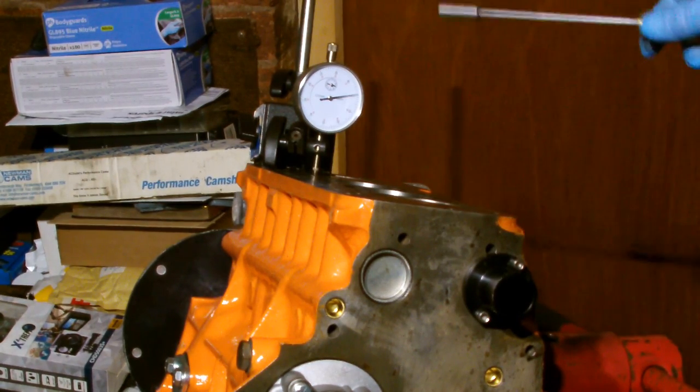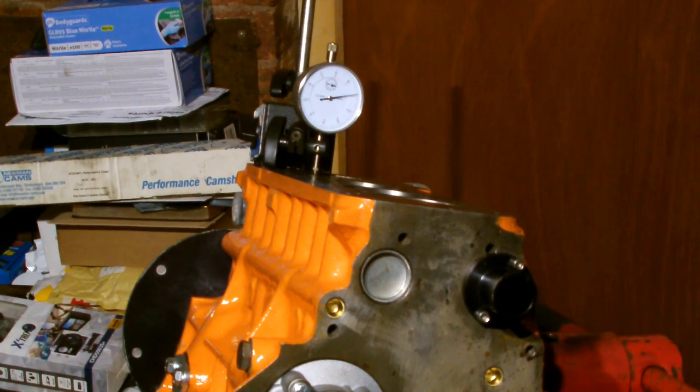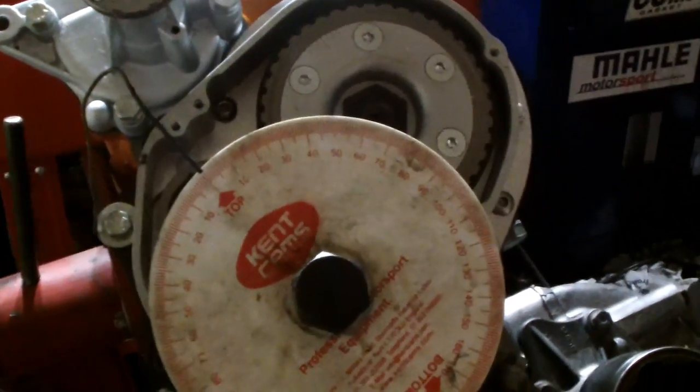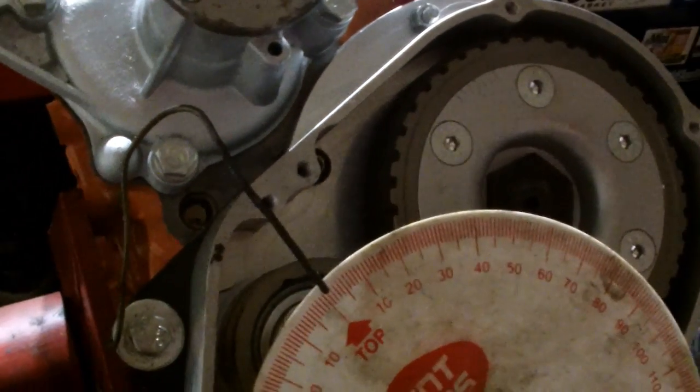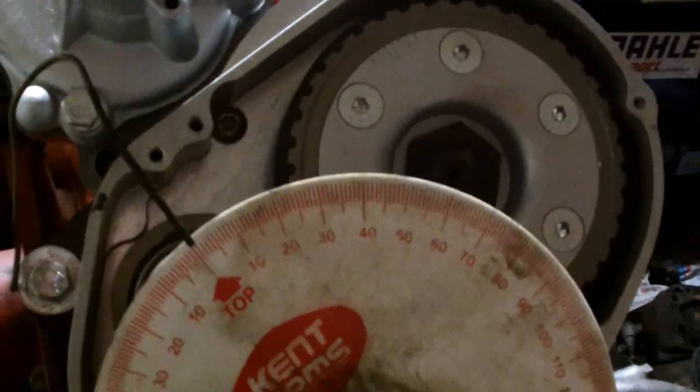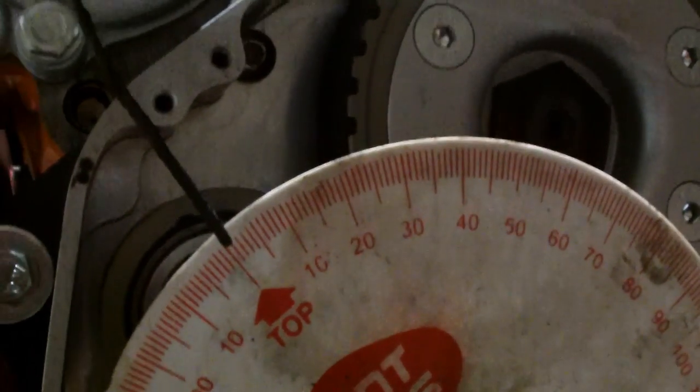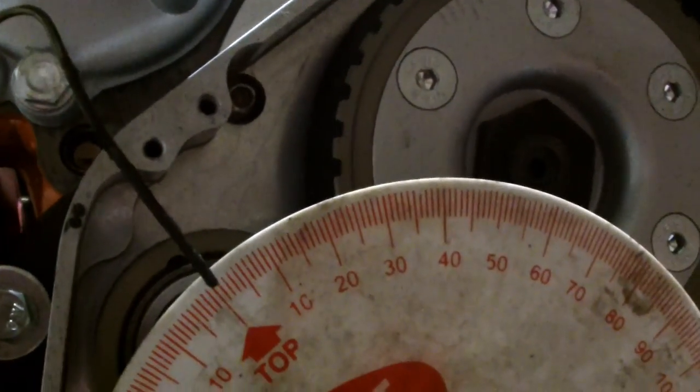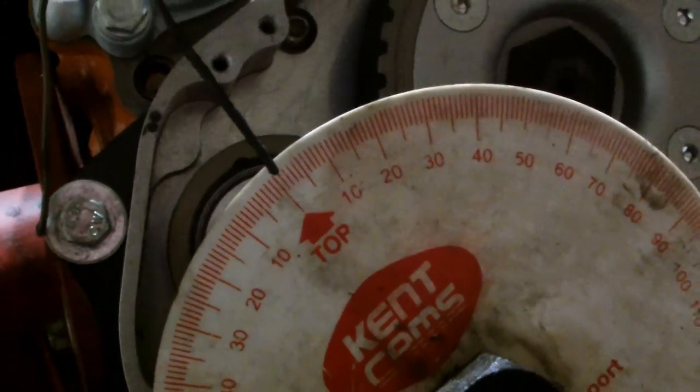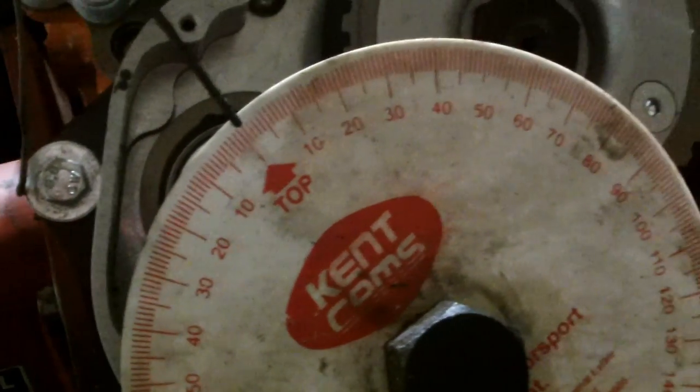I'm going to show you how to set up the dial test indicator to do the cam timing. When you've got the piston at top dead center, you need to get a piece of wire or similar and bolt it to the block. Put your cam timing disc on and set it so that rod is facing to top dead center. That's really important. It's just a reference point, but as long as it's facing to the top, you'll be alright.